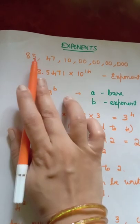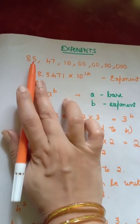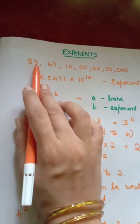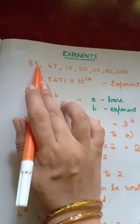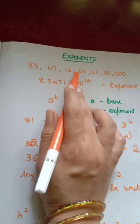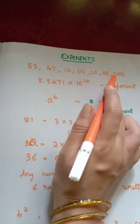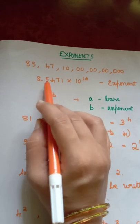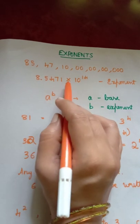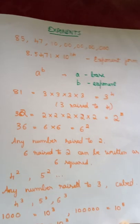Here you have taken point here and then counting the number of digits leaving the first number: 1, 2, 3, 4, 5, 6, 7, 8, 9, 10, 11, 12, 13, 14. So you have written 8.5471 into 10 raised to 14 in the exponent form. So these are the basics of exponents.